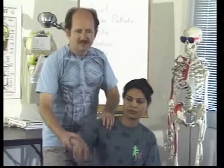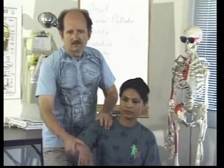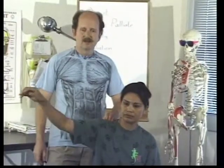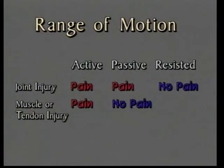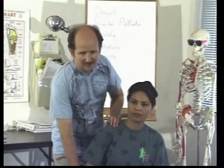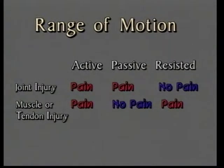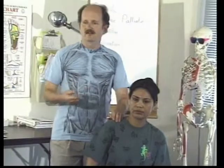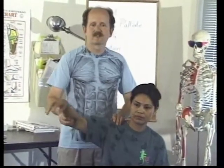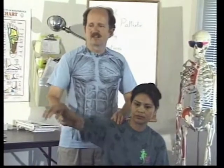If the problem is in the muscle or tendon: passive range of motion will not hurt — unless you're actively stretching the affected muscle or tendon. Active range of motion will hurt because the muscle is being used. And resisted isometric will also hurt. So with muscle or tendon problems, the only thing that won't hurt is passive range of motion.